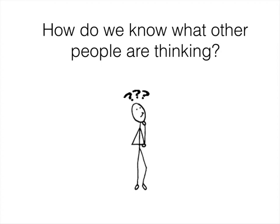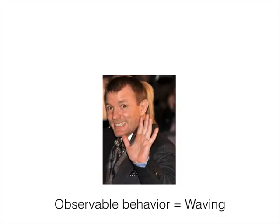How do we know what other people are thinking? After all, we have no way of directly observing what's going on inside of their heads. But what we can do is observe other people's actions and use this information to make guesses about what they're thinking.